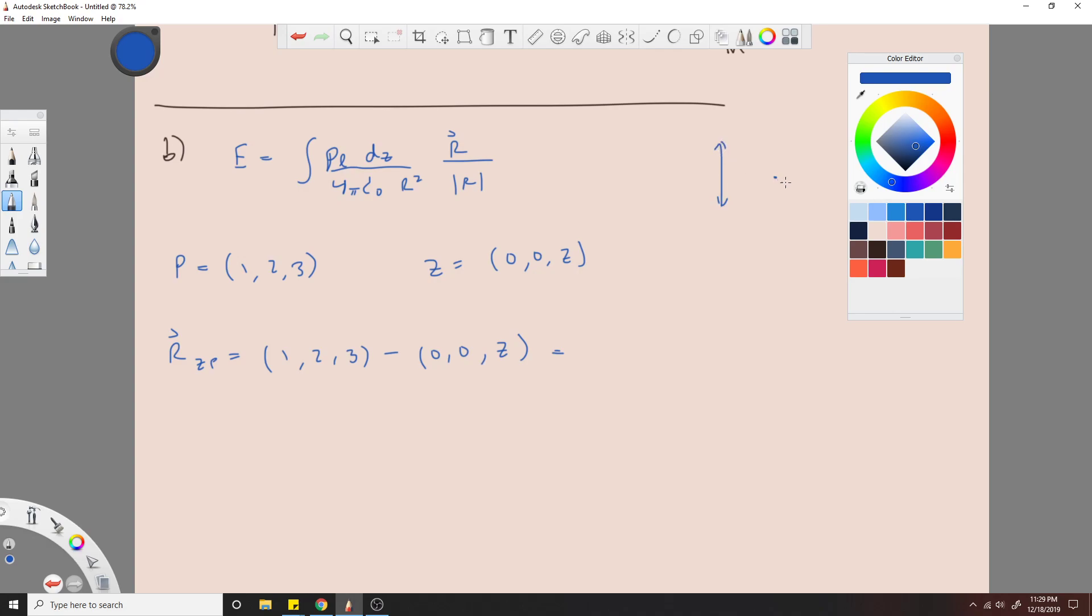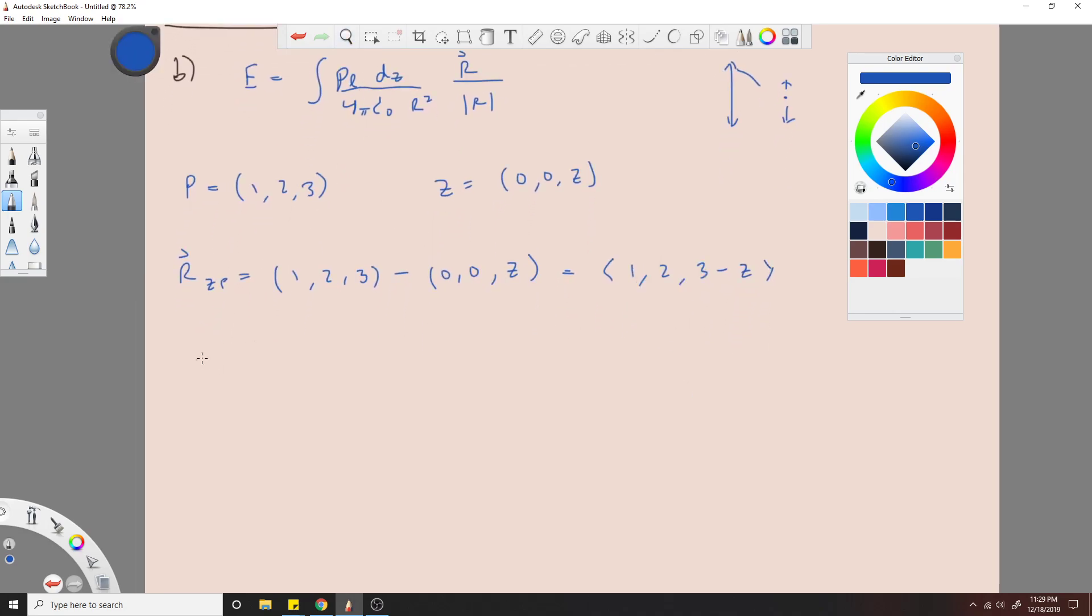So the points over here may not necessarily cancel. So let's say the points down giving you a component like that, they may not cancel the components down here, because it's not infinite. So that's the only reason. So now you'll have something that looks like this: 1, 2, 3 minus Z. Then you just plug all this in.